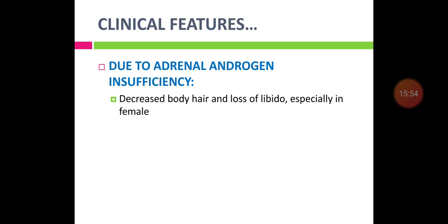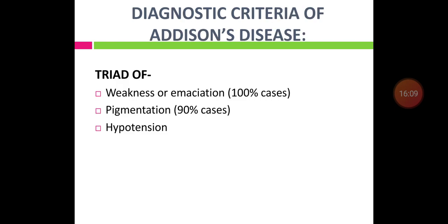Androgen deficiency results in decreased body hair — axillary and pubic — and loss of libido, especially in females. The diagnostic triad of Addison's disease is: weakness or emaciation, pigmentation, and hypotension. If all three features are present, the diagnosis of Addison's disease can be made.